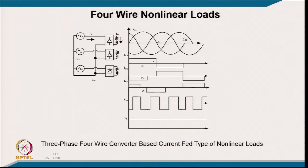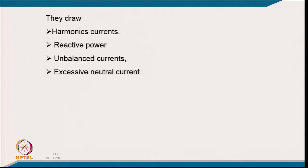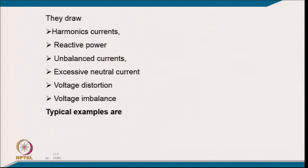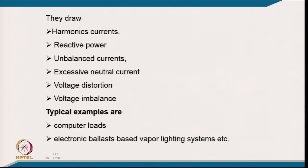In a three-phase four-wire system, even with balanced square-wave currents in all three phases (120 degrees apart), there is excessive neutral current — a square wave at three times the supply frequency. Ideally with sinusoidal balanced currents the neutral current would be zero, but with harmonics it is significant, causing losses in the neutral conductor. Three-phase four-wire non-linear loads draw harmonics, reactive power, unbalanced currents, and excessive neutral current. Examples include computer loads and electronic ballast-based vapor lighting systems.